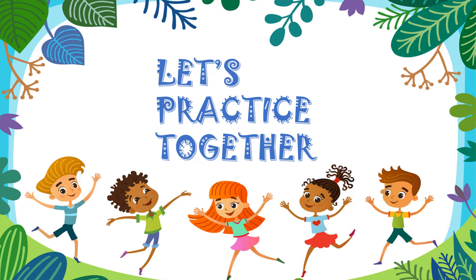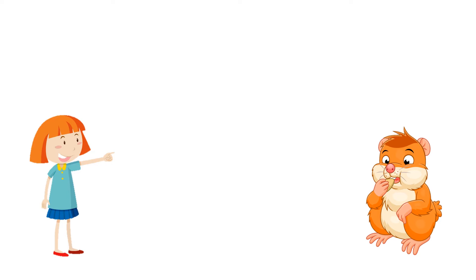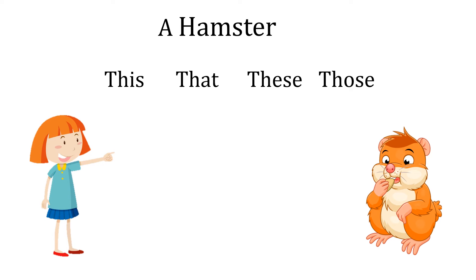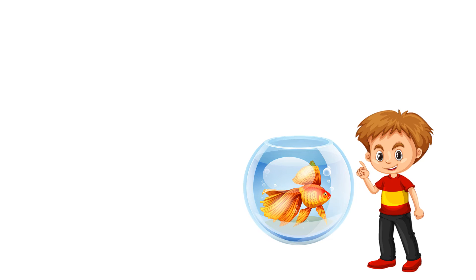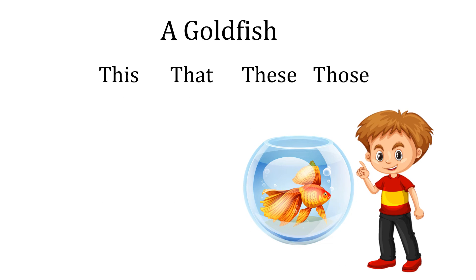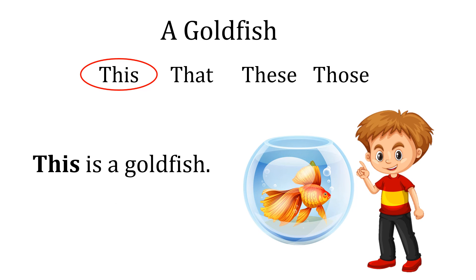Let's practice together in another exercise. What do you think about this hamster? It's far and it's only one, so I'll say 'that is a hamster.' What do you think about this fish? A goldfish. Is it one or more than one? It's only one. Is it near or far? It's near. So I'll use 'this' — 'This is a goldfish.'